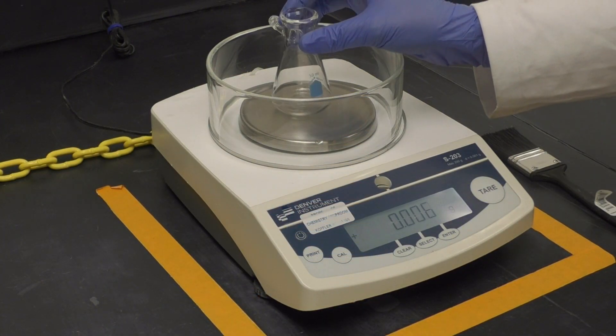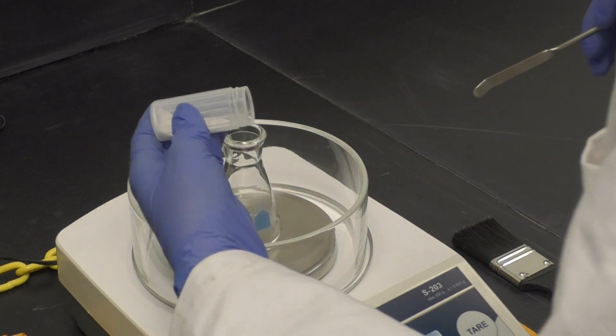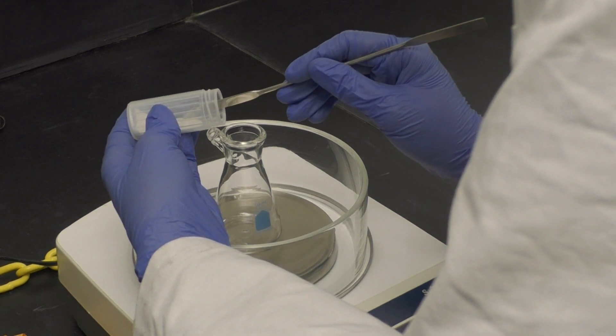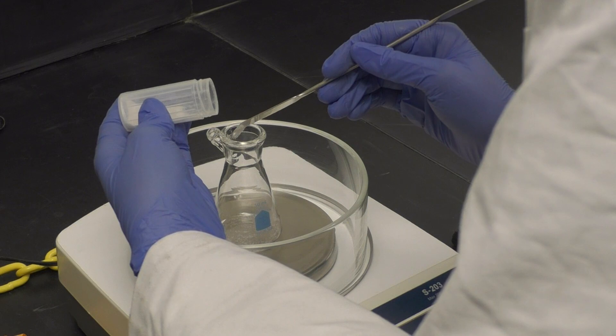Now you will prepare your solid. You will weigh everything directly into the filter flask, so place that on a balance first and tare it. Now carefully weigh out your pure solid or ground up antacid tablet directly into the flask.